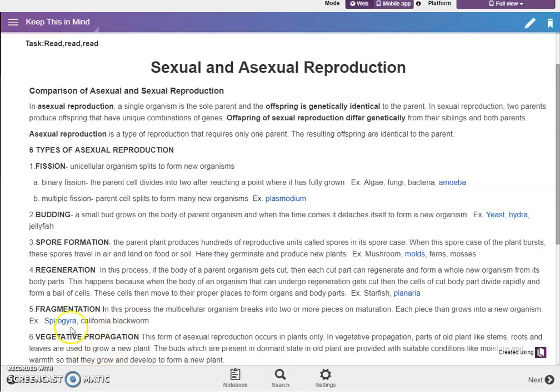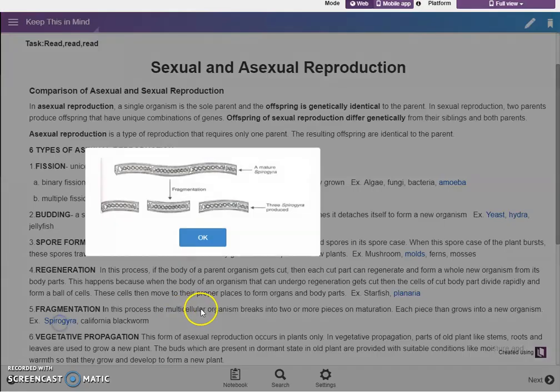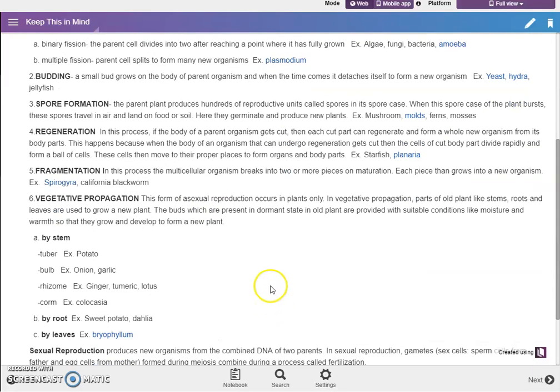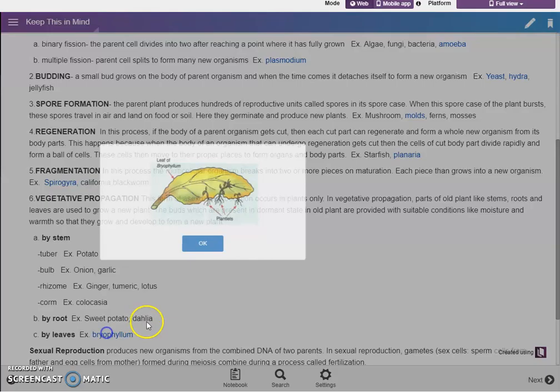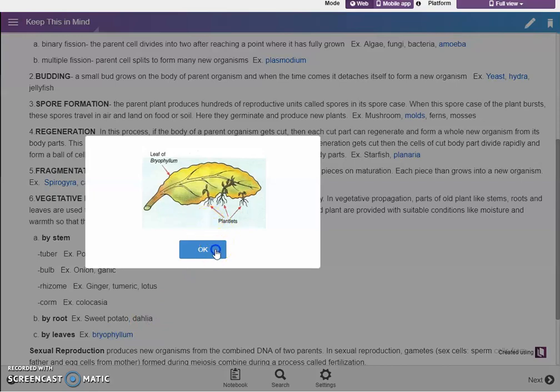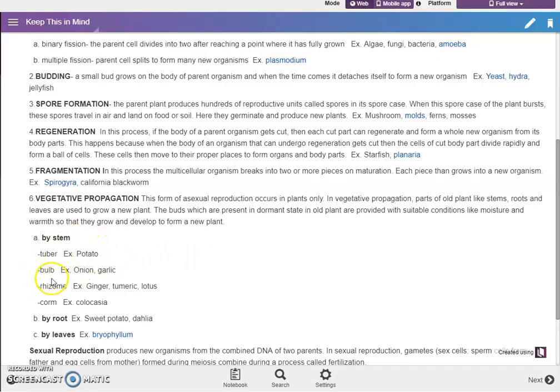And for fragmentation, spirogyra. Then for vegetative propagation, we have by stem, by root, by leaves. So for by leaves, we have bryophyllum. For by stem, we have tuber, bulb, rhizome, corm, which has an example too.